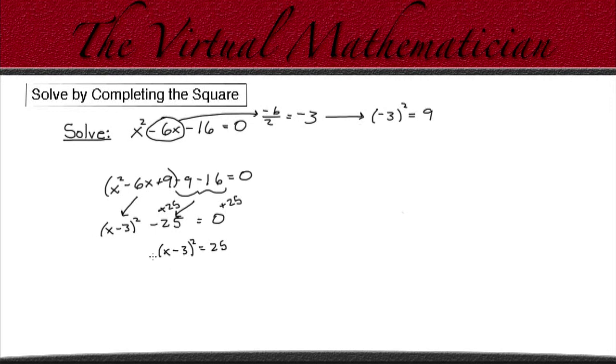Ok, so the next thing we need to do is take the square root of both sides. And remember, when we take the square root of a number, we have to consider the positive and negative value of the square root. Because 5 times 5 equals 25 and negative 5 times negative 5 also equals 25. So they're both the square root.